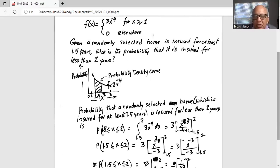So probability x is between 1.5 and 2 is equal to 3x to the power of minus 3 divided by minus 3 limits of integration 1.5 to 1.5 to 2.